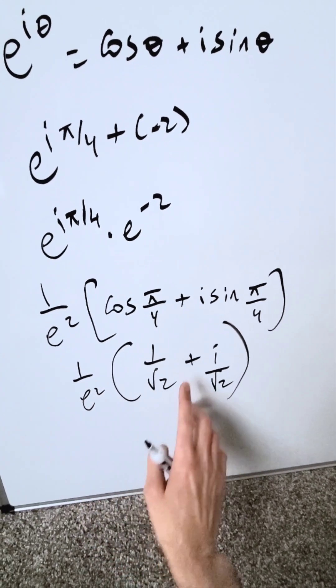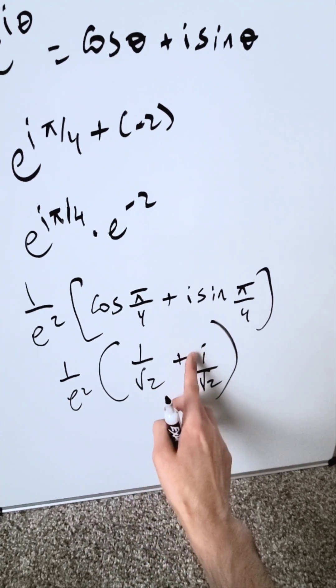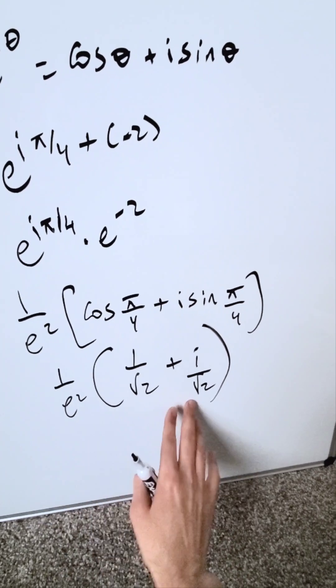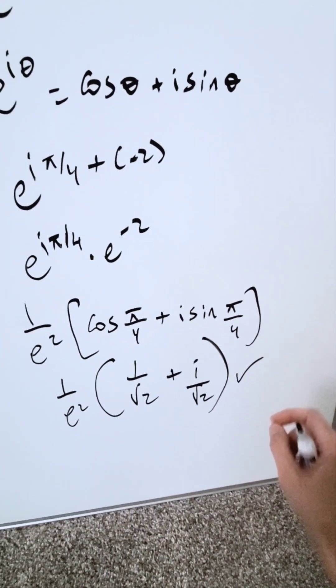1 over e square, parentheses, 1 over root 2 plus i over root 2. You can distribute this e square if you want, the denominator, or you can just keep it as is. This should be a good answer.